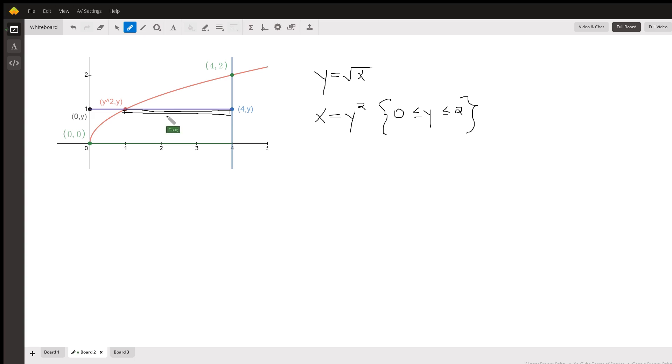To do that, we have to rewrite the original function y equals the square root of x as x equals y squared. You can do that by squaring both sides of that equation. And then you have to restrict y to positive values, otherwise you get the bottom half of this parabola. So now we're integrating with respect to y.